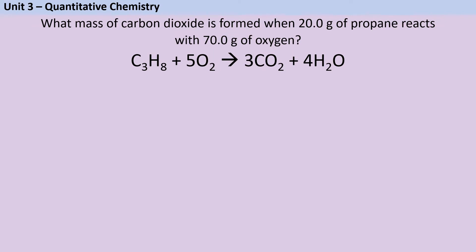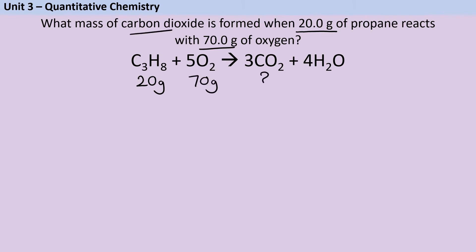Before I do any calculations, I'm going to do a little bit of writing to make sure I don't waste any time in the exam by working out the relative formula mass or the moles for a substance I don't actually need. So I've got 20 grams of propane — I'll write that underneath the propane — and 70 grams of oxygen written under the oxygen. I'm trying to work out carbon dioxide, so I put a question mark there, and I'm going to cross out the water so I don't waste any time with it.